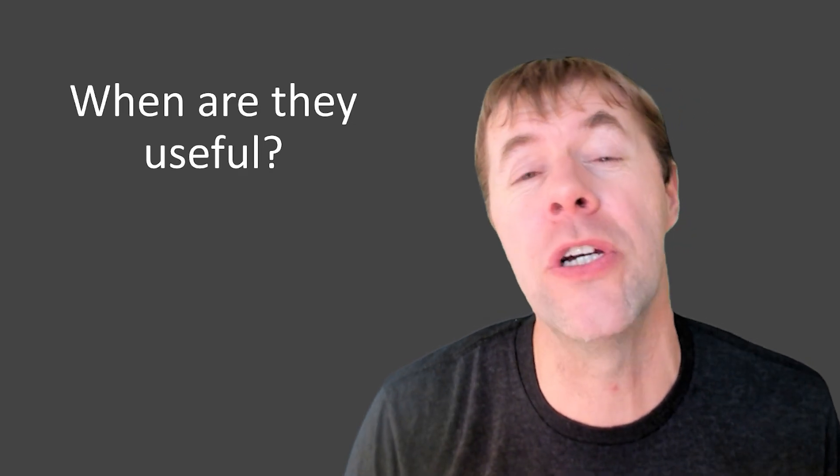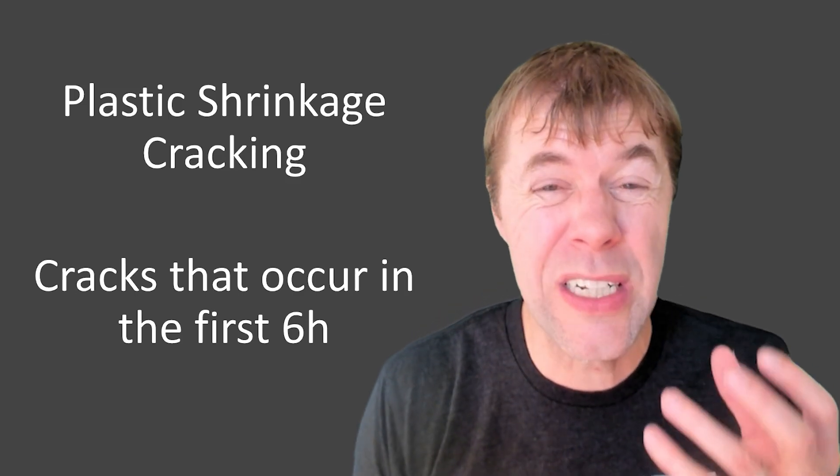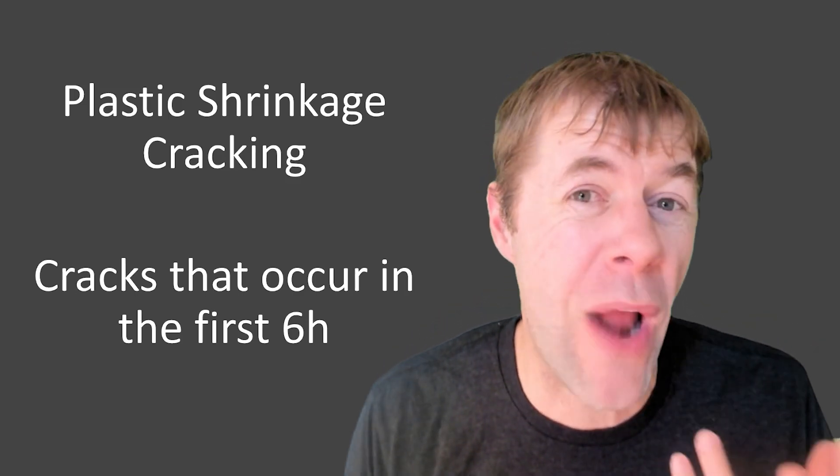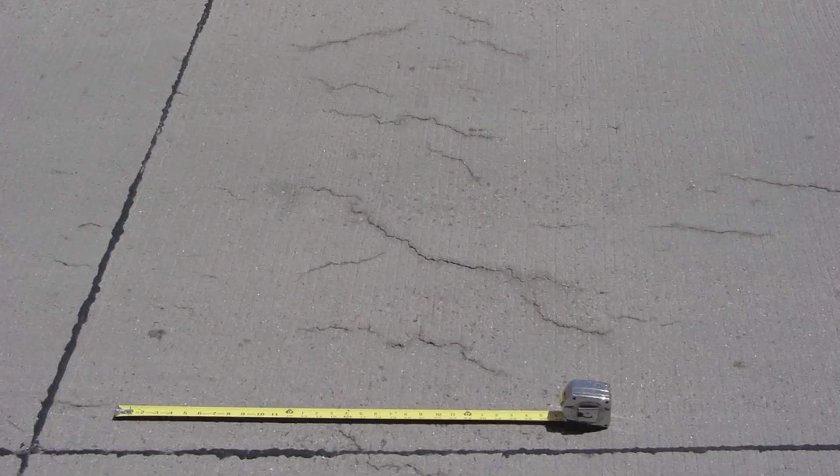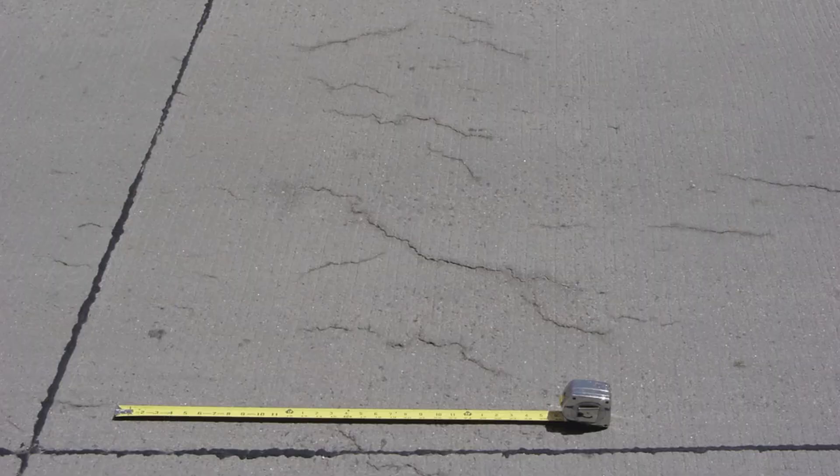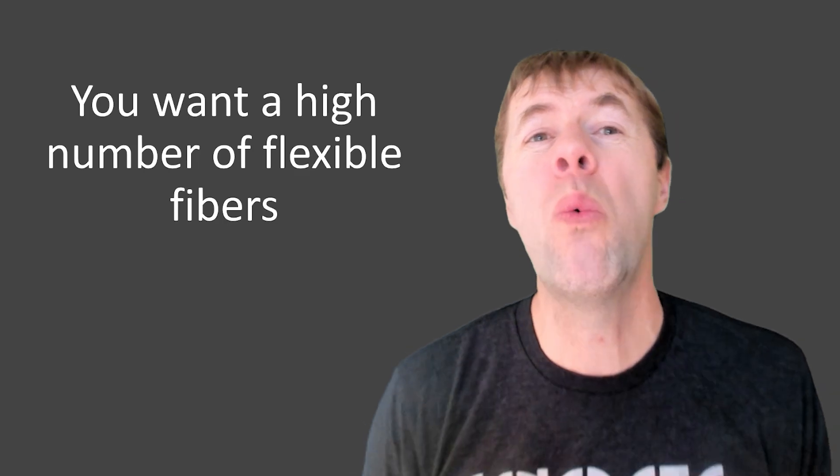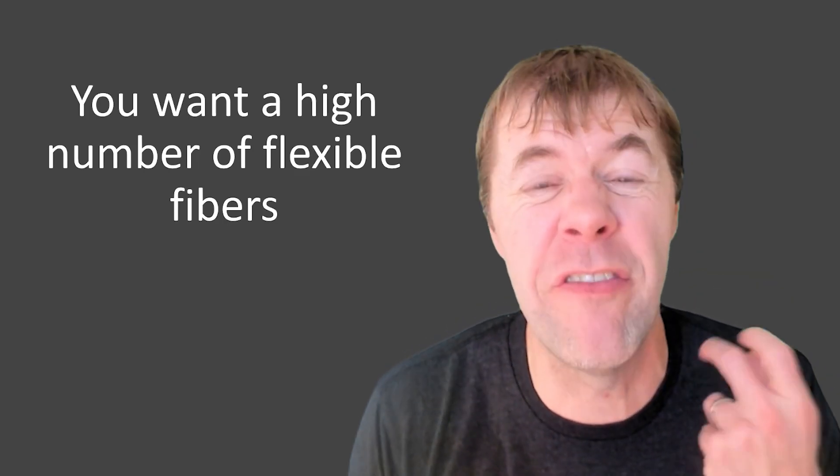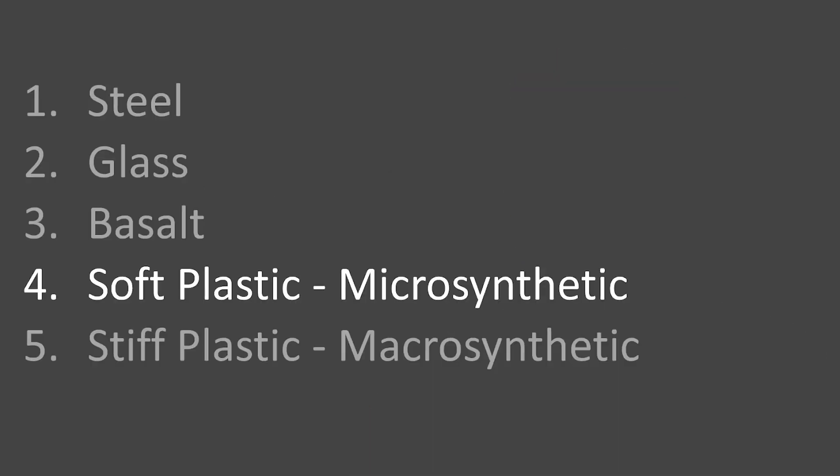There's something called plastic shrinkage cracking. That's cracks that occur when the concrete is still wet, when it's still fresh, in the first six hours or so. They may look like this. See those parallel cracking patterns there? This typically happens when it's hot and windy. I've got videos about it as well. But you want a high number of very flexible fibers. Some examples are soft plastic micro synthetic fibers, and I've got some videos of some of them here.